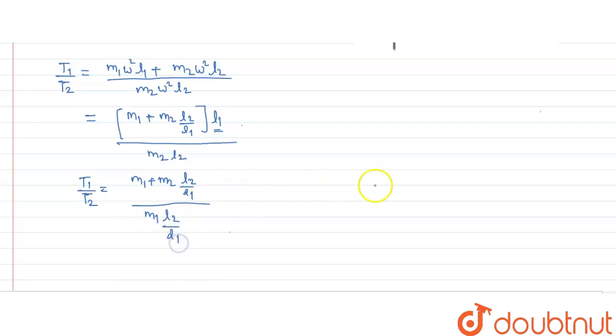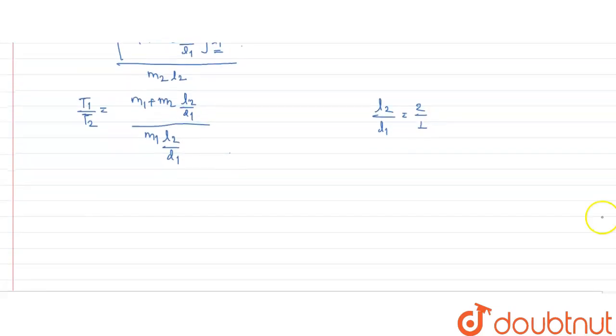L2 by L1, in question it is given that L2 by L1 is 2 ratio 1. Putting the value of L2 upon L1, we get T1 by T2 equal to M1 plus 2M2 upon M1 into 2. Sorry, it is not M1, it is M2. This is also M2.